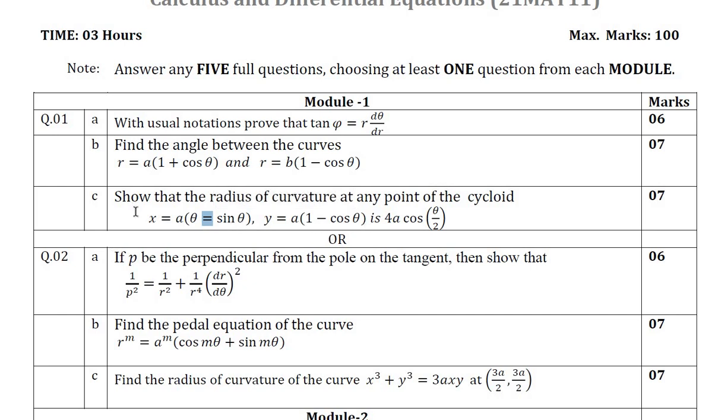For this you have a choice as pedal equation. Question 2A to prove that standard notation of pedal equation 1 over p square equal to 1 over r square plus 1 over r power 4 dr by d theta the whole square. Then question B find the pedal equation of the given curve r power m equal to a power m cos m theta plus sin m theta. Finally question 2C find the radius of curvature for the curve x cube plus y cube equal to 3Axy at the given points.